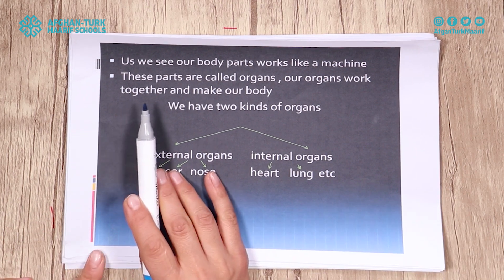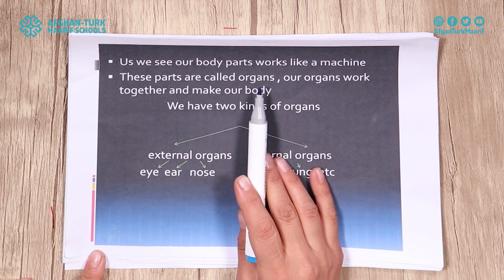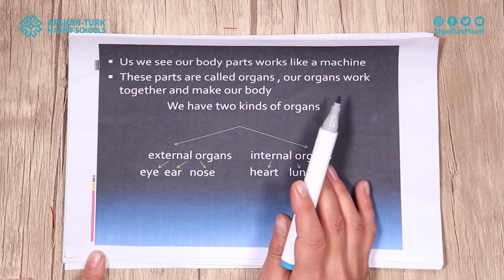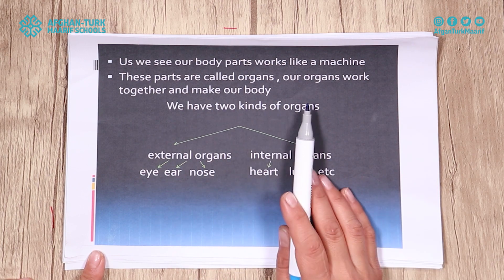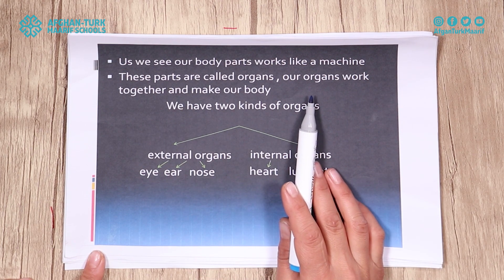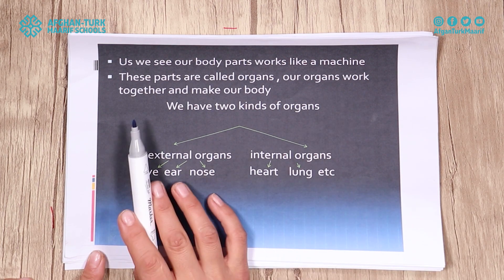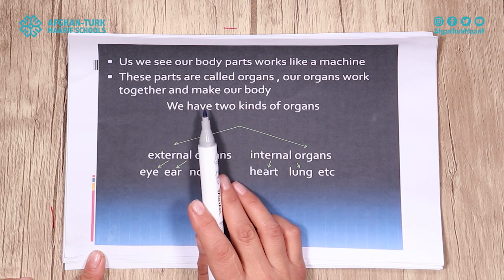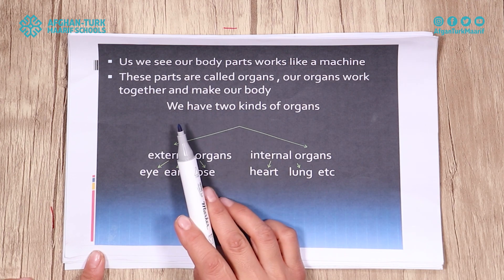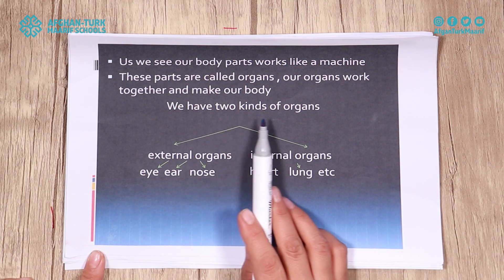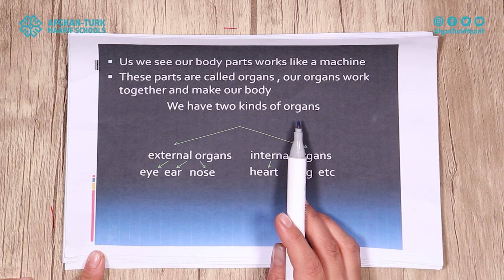As we see, our body parts work like a machine. These parts are called organs. Our organs work together and make our body. We have two kinds of organs.